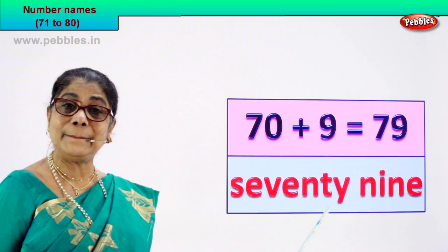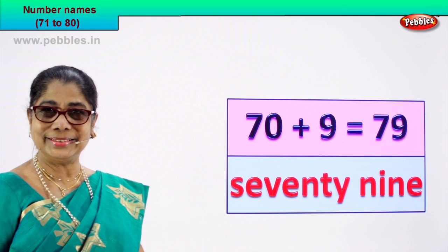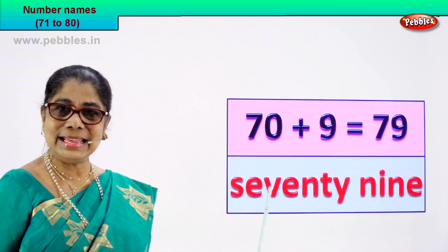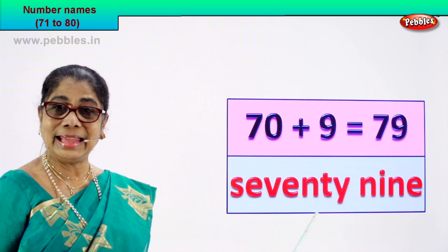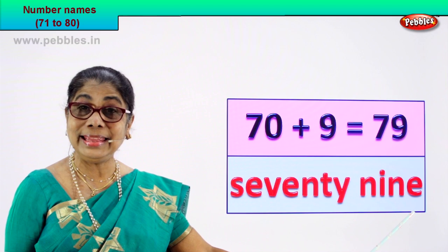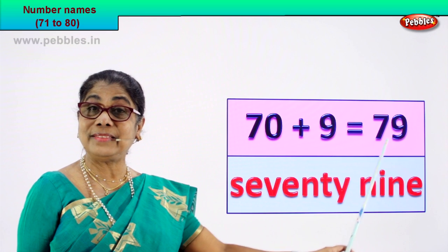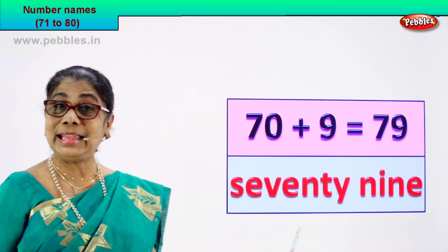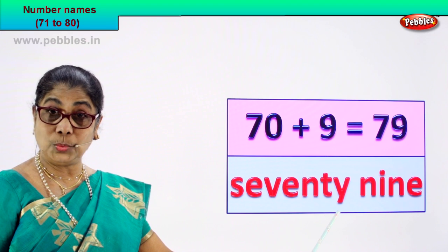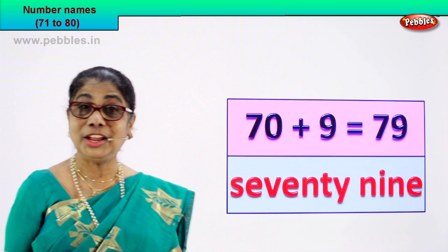How do we write its name? You know to spell 70, you know to spell 9. Good. s-e-v-e-n-t-y — 70, then n-i-n-e — 79. Numeral 79, you write its name as s-e-v-e-n-t-y, n-i-n-e — 79. Good.